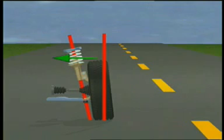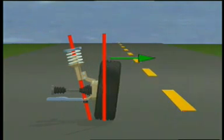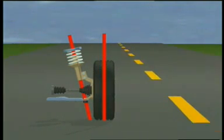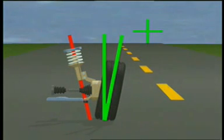Camber is defined as the inward or outward tilt of the wheel at the top, as viewed from the front. Camber is usually specified positive on the front wheels.